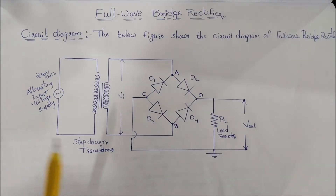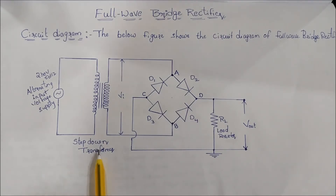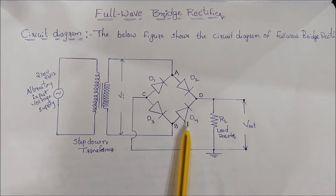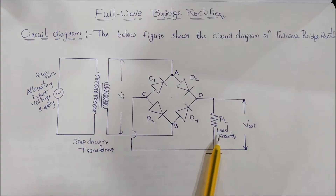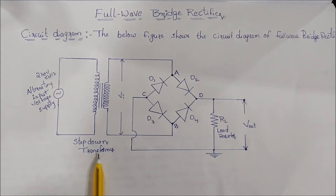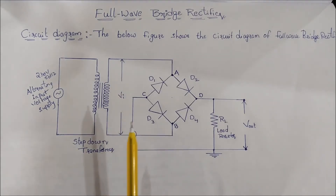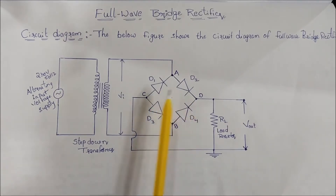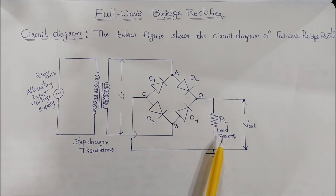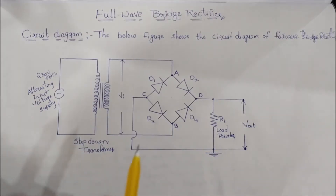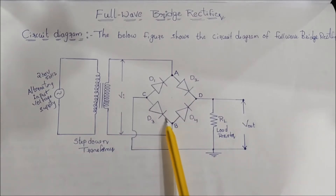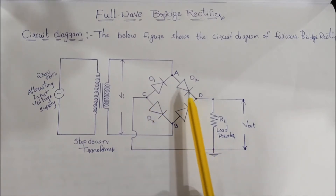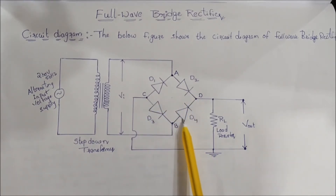This is the circuit diagram of the full wave bridge rectifier. It consists of a step down transformer, 4 diodes named D1, D2, D3, and D4, and a load resistor RL. Here we have all the diodes connected in a bridge formation, so this is the bridge circuit.